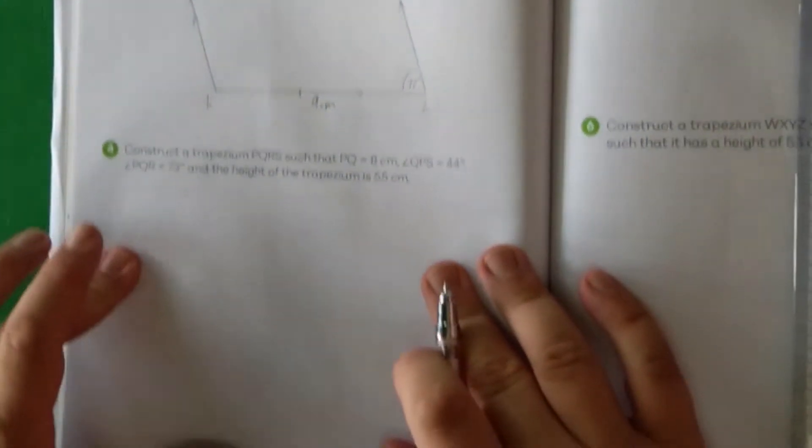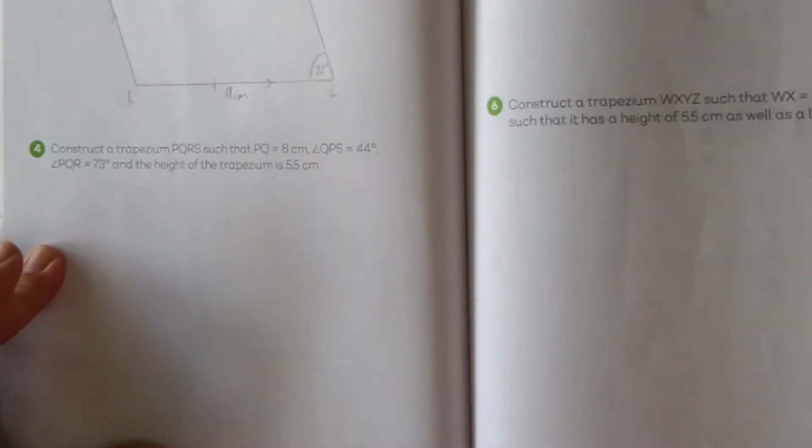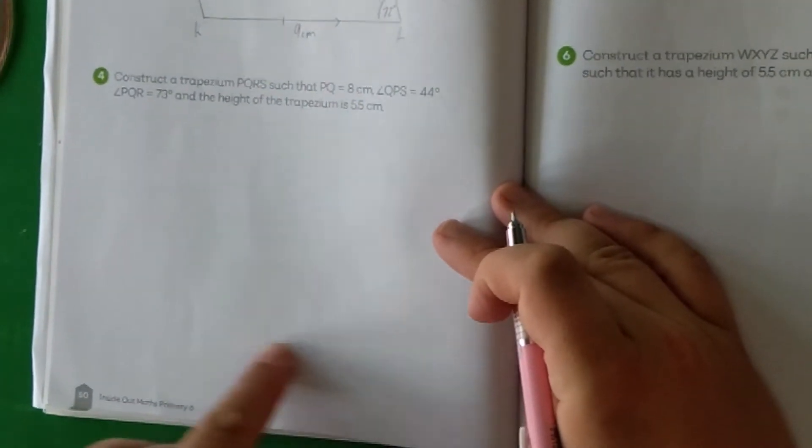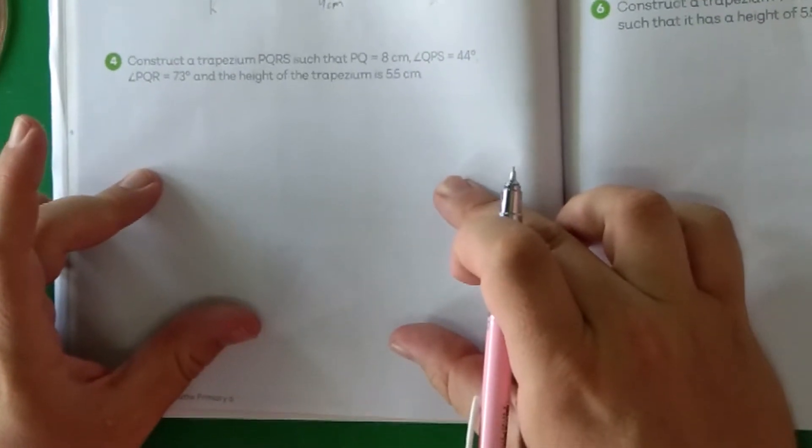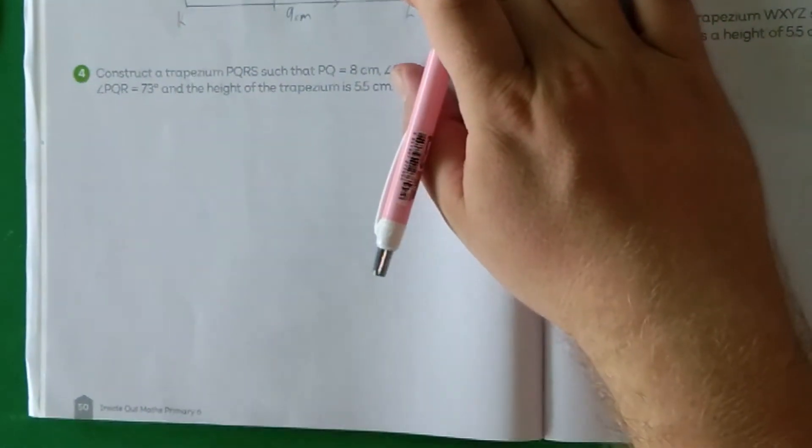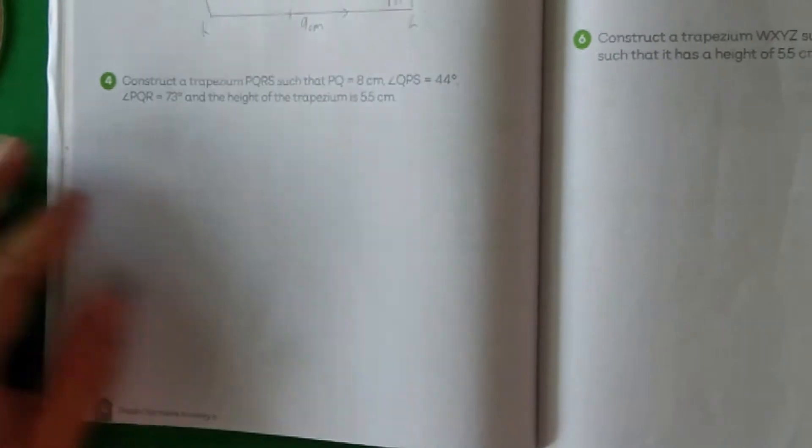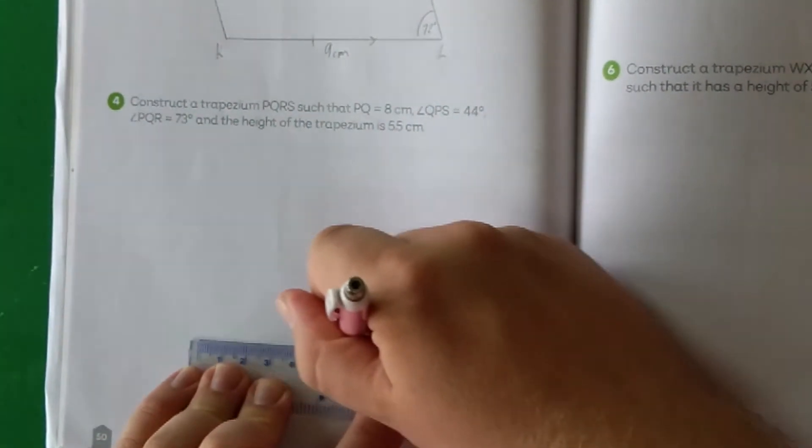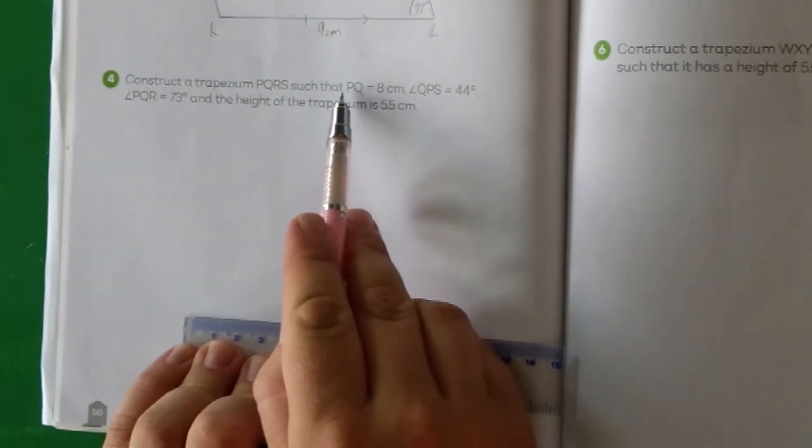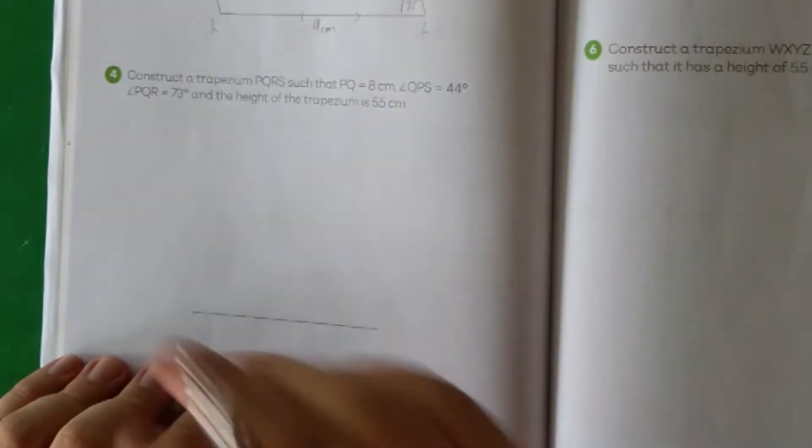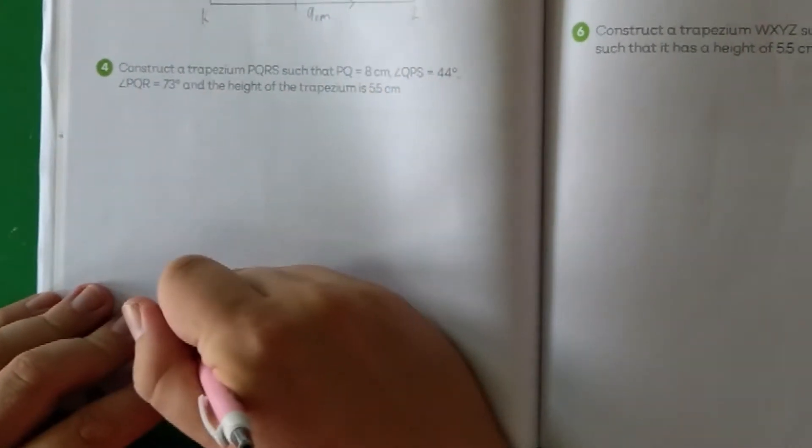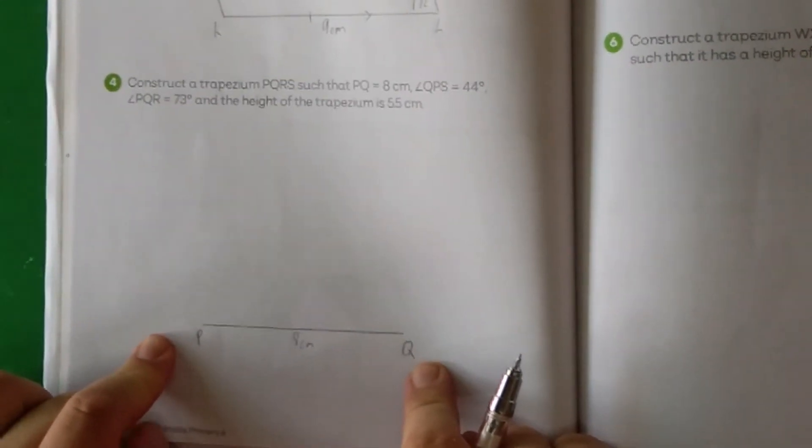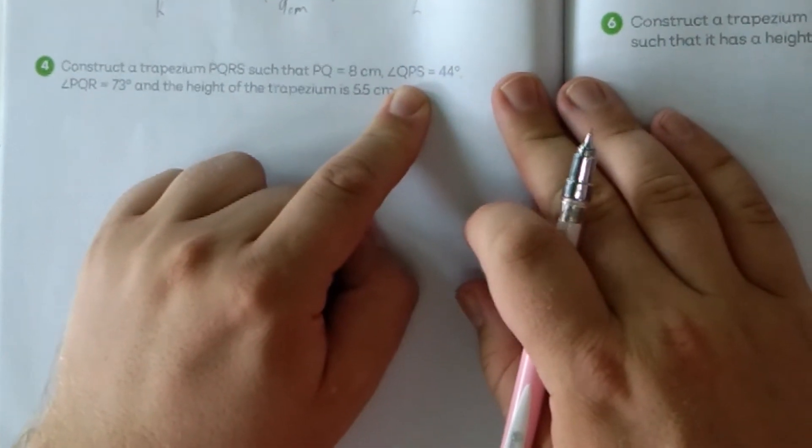Now, we're moving down to probably the most difficult shape we've got here today. This one is a trapezium. A trapezium has a base that's usually longer than the top, and it's going to have two different angles here. Let's start, as usual, with our base of 8 centimeters. That's going to be point PQ. Do pause and finish this before you start this one.